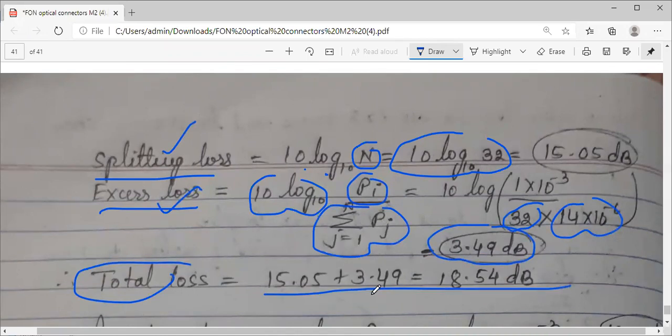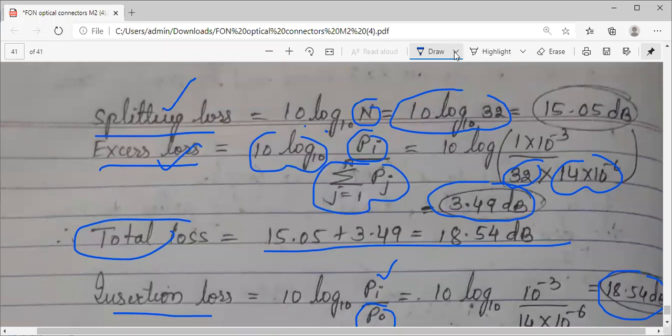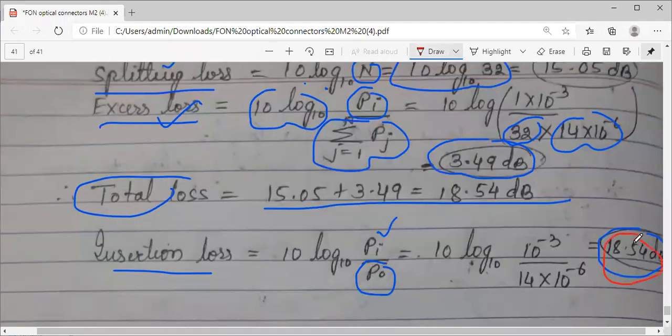Now coming to insertion loss: one milliwatt input, output is 32 times 14 microwatts. Take the ratio, you will get 18.54 dB. You can observe one thing: the total loss that is incurred is 18.54 dB, and insertion loss is also the same. Approximately, you can judge it as total loss in this star coupler equals the insertion loss.